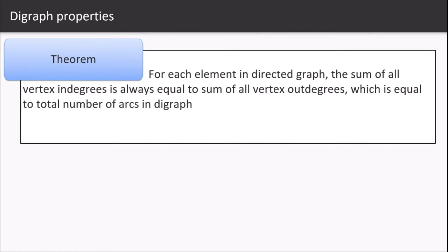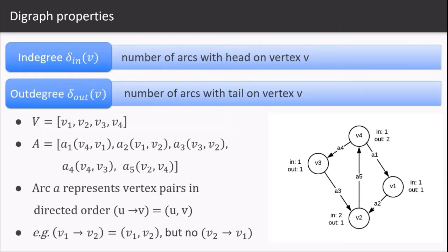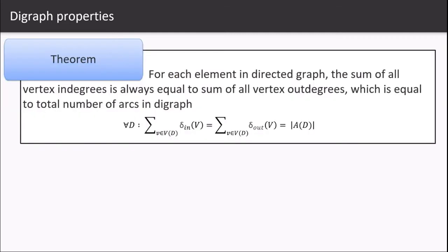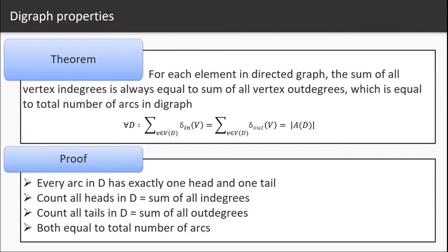So let us prove this theorem by simply looking at the diagram in our previous slide. Here if we count the total in-degrees of the graph which is one, two, three, four, five and counting the out-degrees is one, two, three, four, five. So in-degrees is five, out-degrees is five and the total number of edges is also five, which is the fundamental property of the digraph.